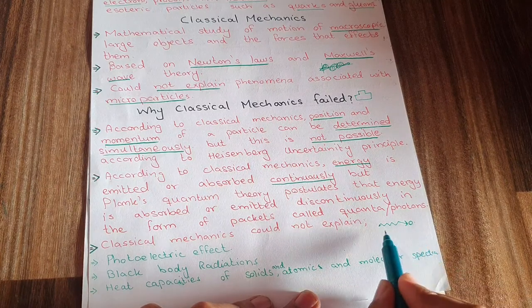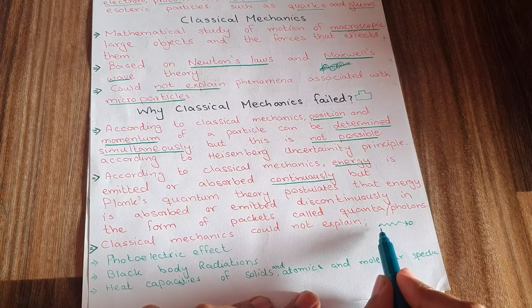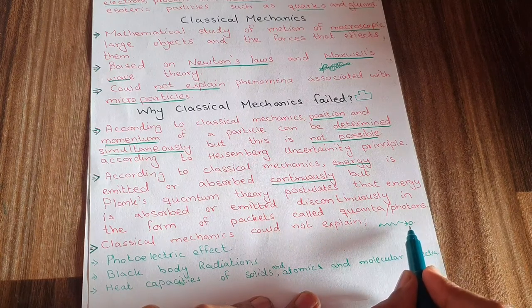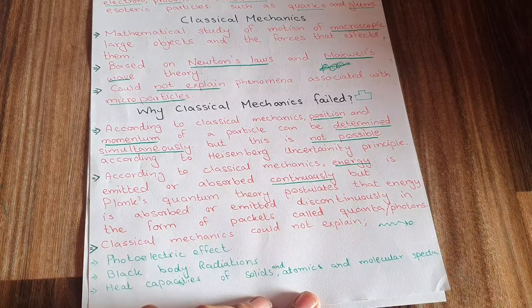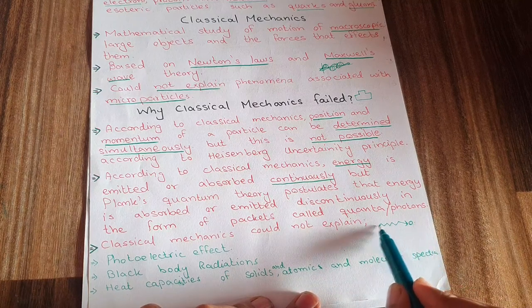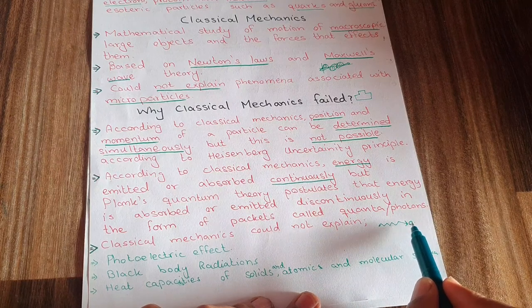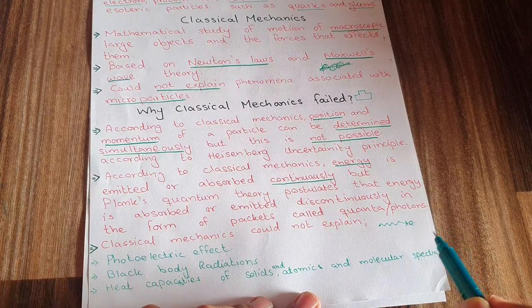Higher energy means shorter wavelength — only a wave of shorter wavelength lets us find the position of an electron. To determine the velocity of an electron, we must use a wave of less energy. If we use a wave of higher energy, the motion of the electron is disturbed and we cannot find its momentum. So to find velocity, we use a wave of longer wavelength.